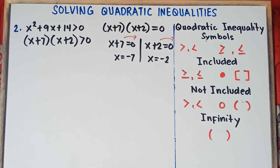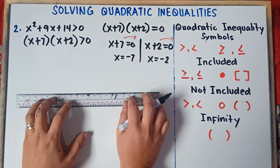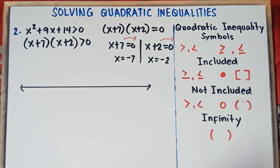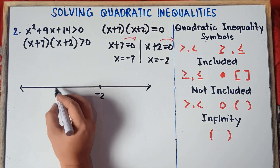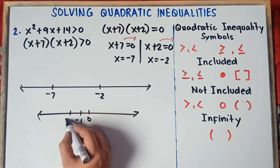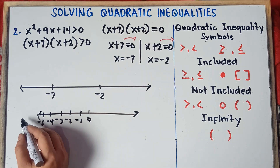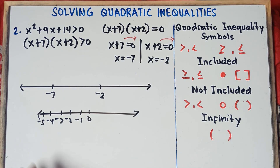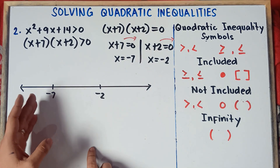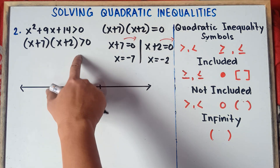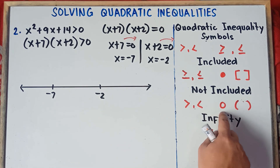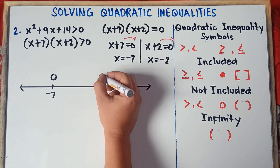Once you have your critical points, you can now plot them on the number line. We know that negative 7 is before negative 2 on the number line — negative 7 is further left. Since we have strictly greater than (not greater than or equal), we use open circles at both negative 7 and negative 2. We will now check three regions: the region before negative 7, the region between negative 7 and negative 2, and the region after negative 2.